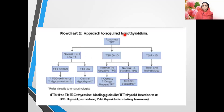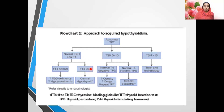The guidelines also provide a diagnostic approach to acquired hypothyroidism. With a normal TSH and low T4, check free T4: if FT4 is normal it may be TBG deficiency or hyperproteinemia — refer to endocrinologist. If FT4 is low, consider central hypothyroidism and seek endocrine opinion. If TSH is in the range of 5 to 10 with normal T4 and negative TPO antibodies, it may be due to obesity or drugs — repeat TFT later. If TPO antibodies are positive, repeat every six months. If TSH is more than 10, treat and find the etiology.